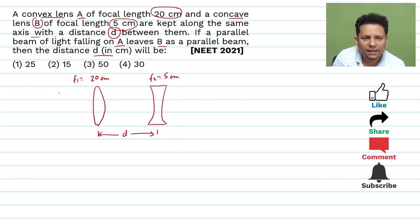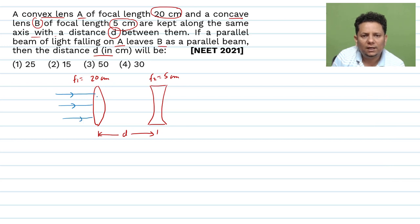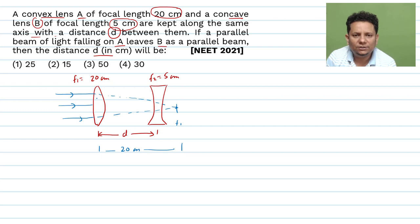Here is the scenario: your parallel beam of rays will be here. So parallel beams of rays will be here. Here we know that your focus is F1. This is F1 distance.